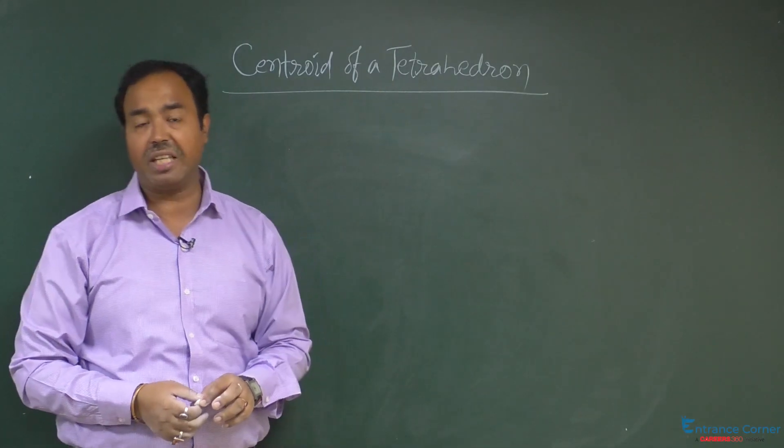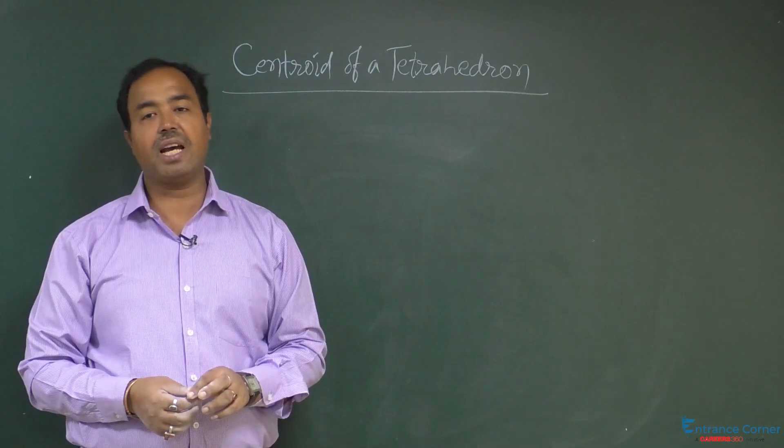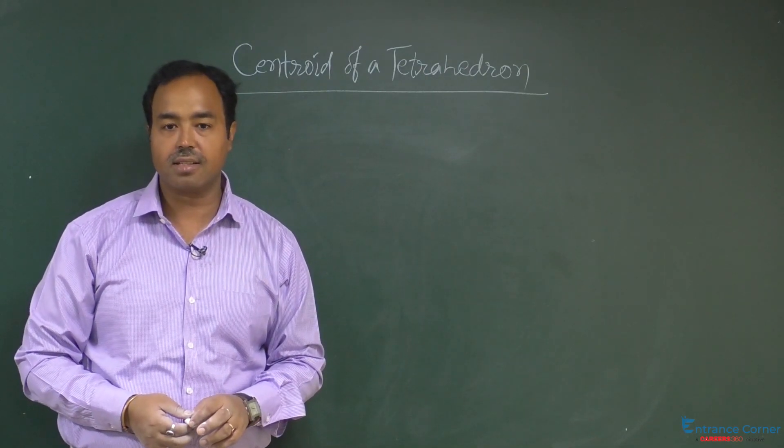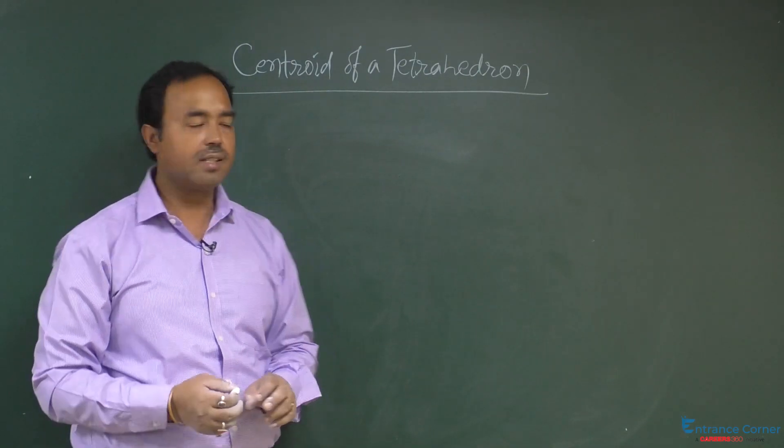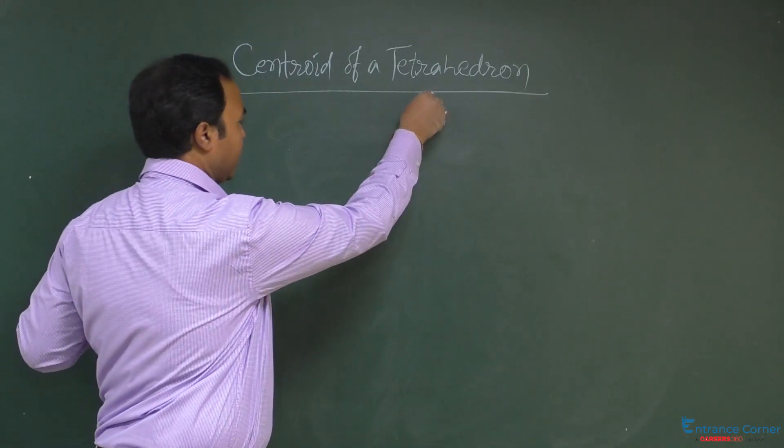Tetrahedron means a solid figure which has four vertices. Four vertices, so it is...